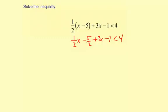Now we want to simplify. 1 half x, and there's a 3x here. Those can be combined together. So 3x and then plus 1 half x, that's 3 and 1 half x. And then this negative 5 halves, that could be written as negative 2 and 1 half. And then minus 1, less than 4.